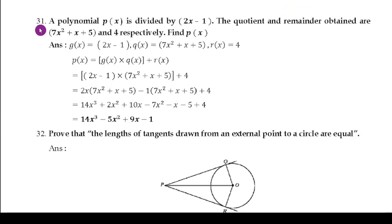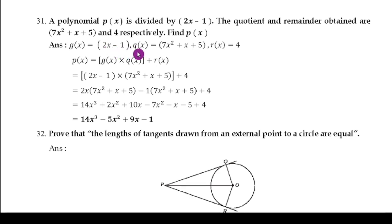31st question — this is a 3 marks question. A polynomial P(x) is divided by 2x minus 1. The quotient and remainder obtained are 7x² + x + 5 and 4 respectively. Find P(x). So they have given G(x) = 2x − 1, Q(x) = 7x² + x + 5, and remainder R = 4. The formula is P(x) = G(x) × Q(x) + R(x).